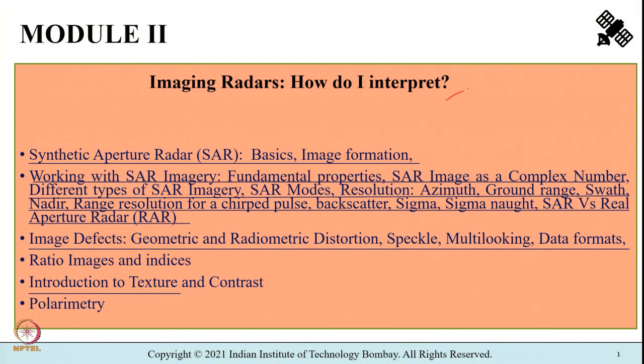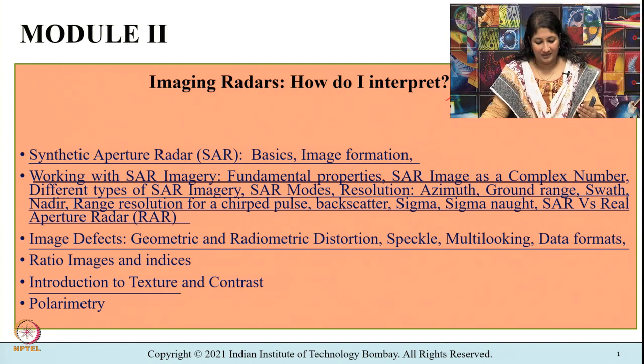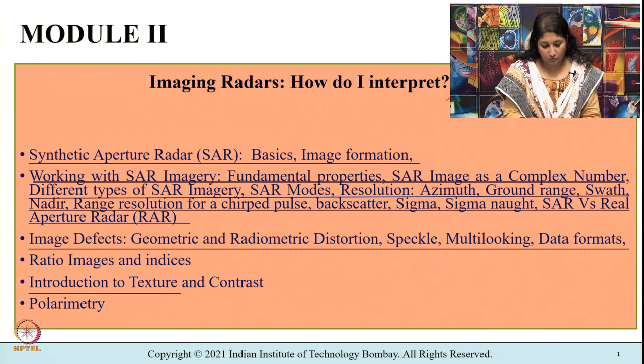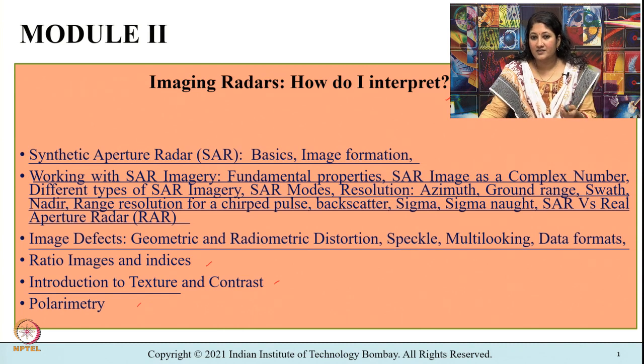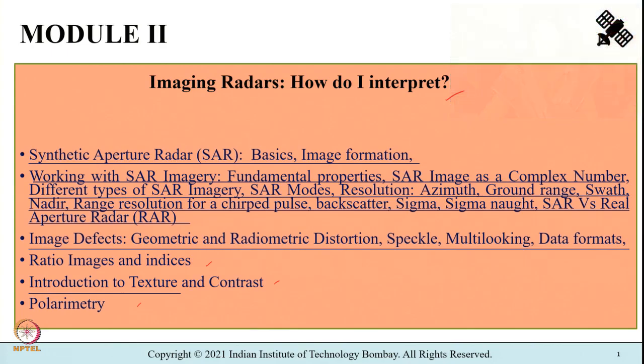Hello and welcome to this lecture. Before we proceed, let us quickly go through the topics we have been covering as part of module 2. We are still trying to answer the question: imaging radars - how do I interpret? The remaining topics in module 2 are ratio images and indices, contrast, and polarimetry. In the last class we understood what texture is and how to compute the gray level co-occurrence matrix using a simple numerical example. In this 11th lecture of module 2, we shall continue to understand about texture in synthetic aperture radar imagery.